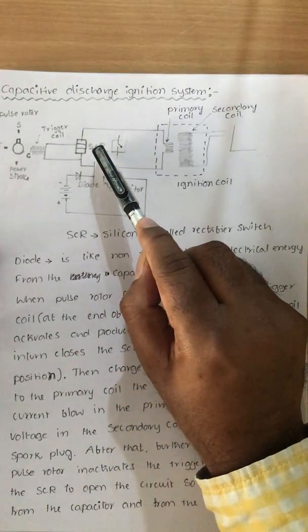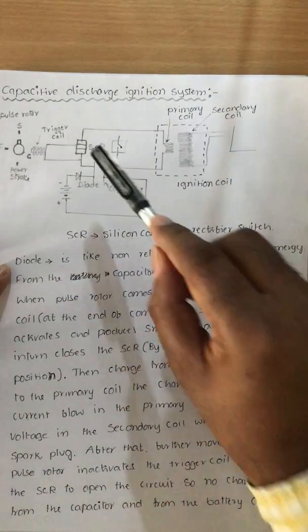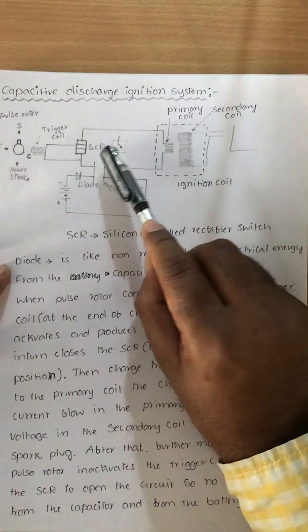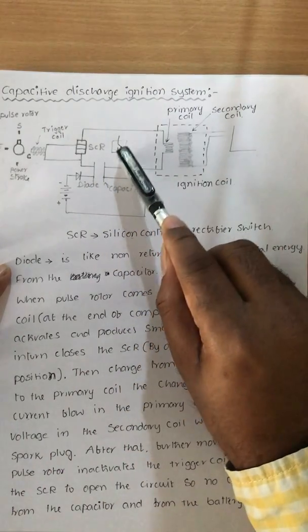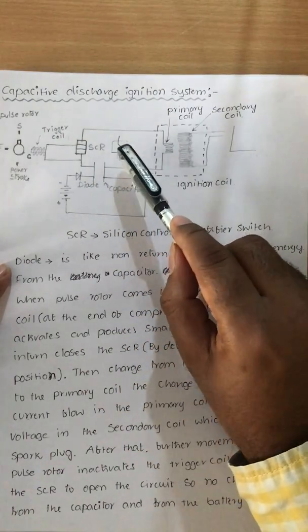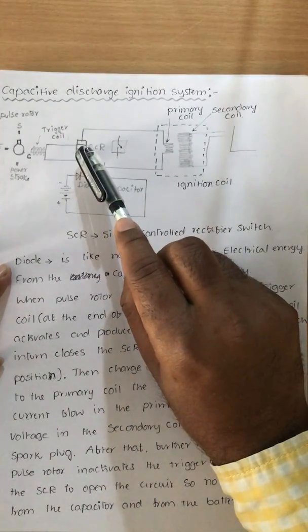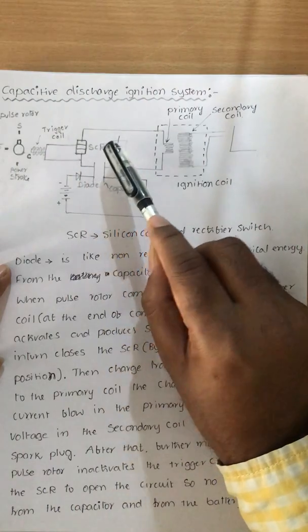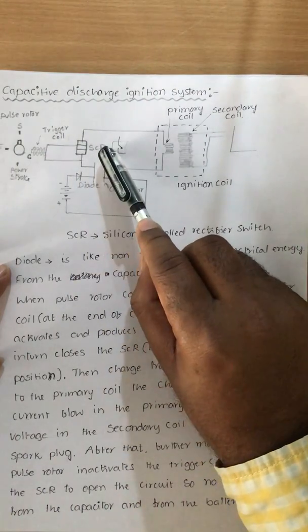The SCR, or silicon controlled rectifier, is normally open at all times. When a small amount of current is supplied to the SCR, it closes.